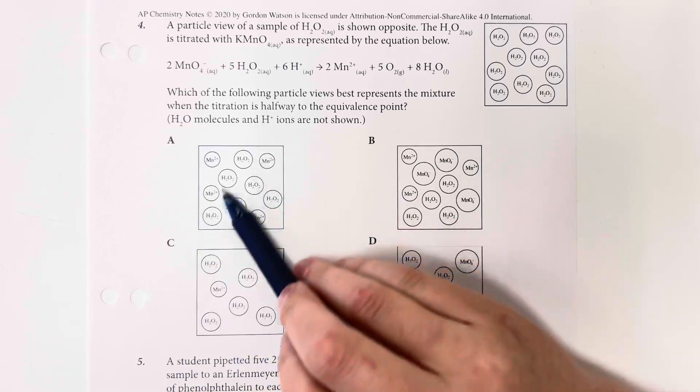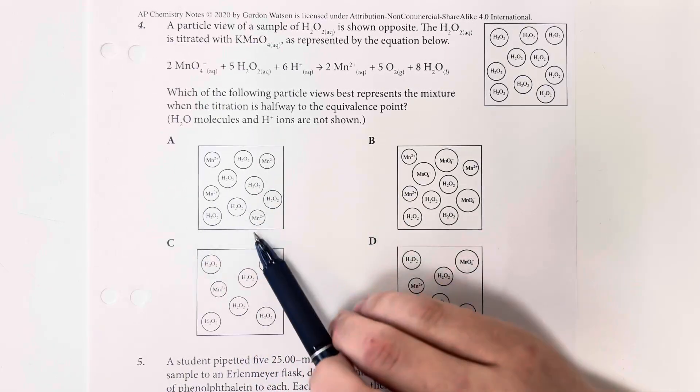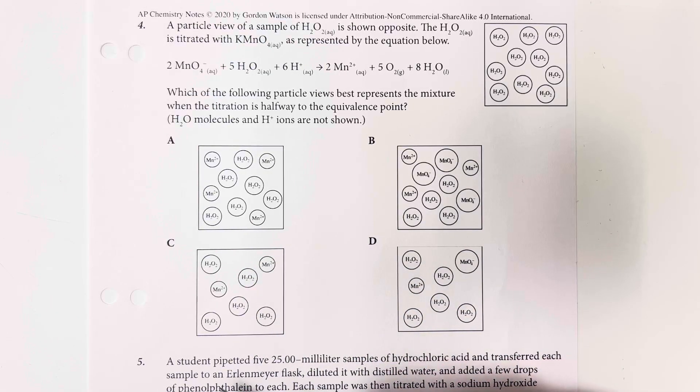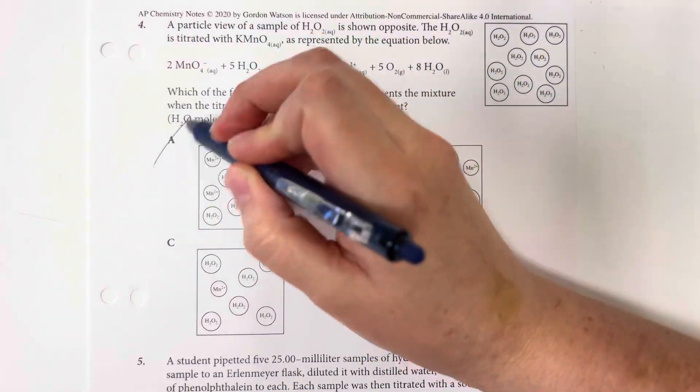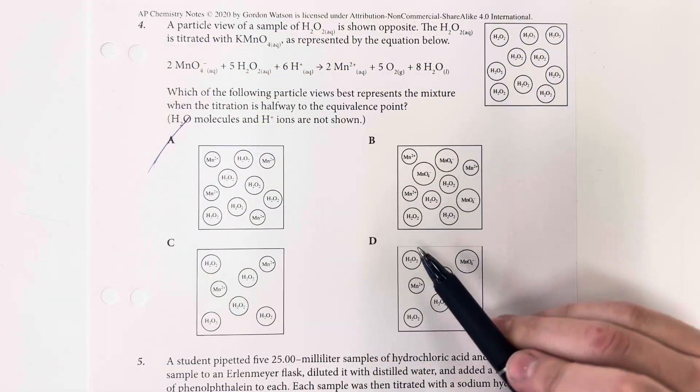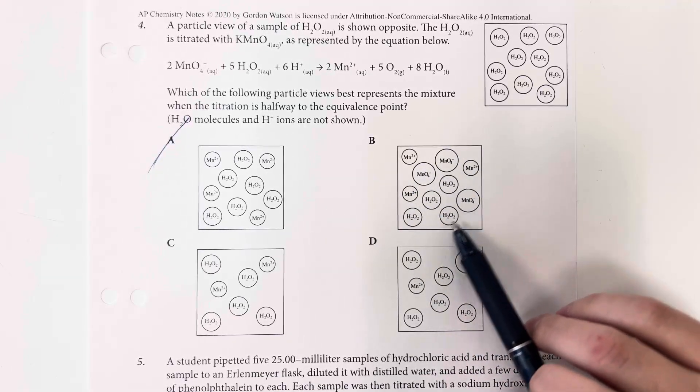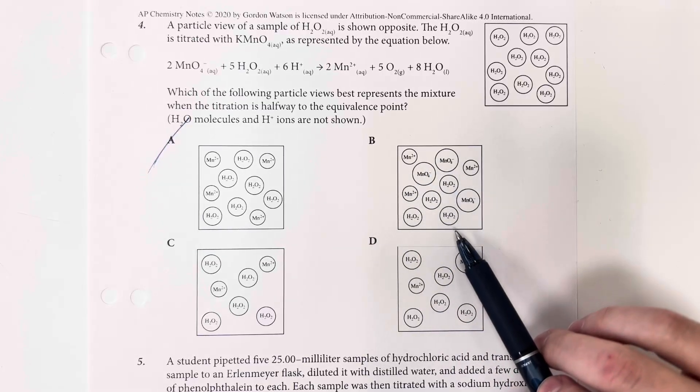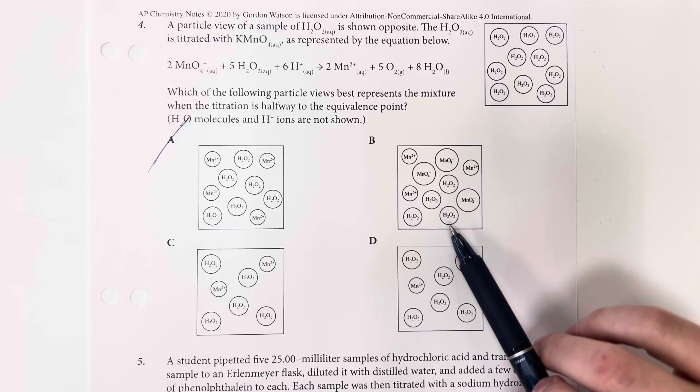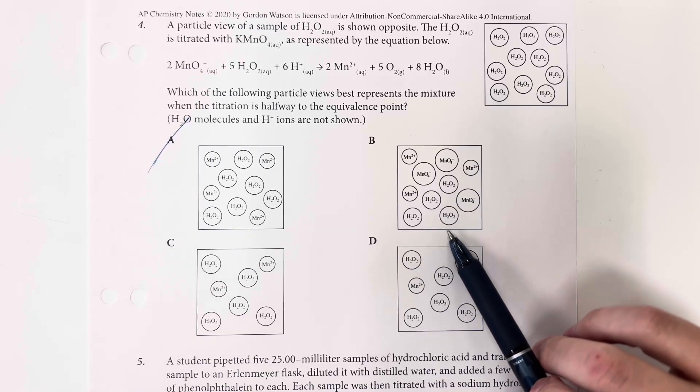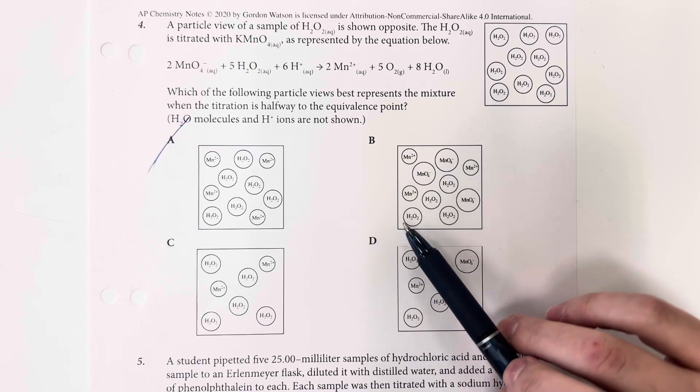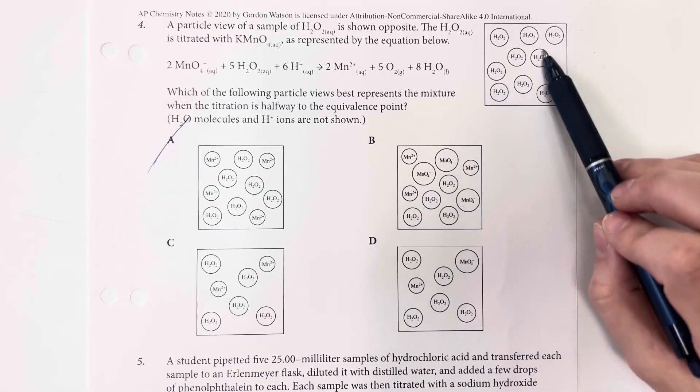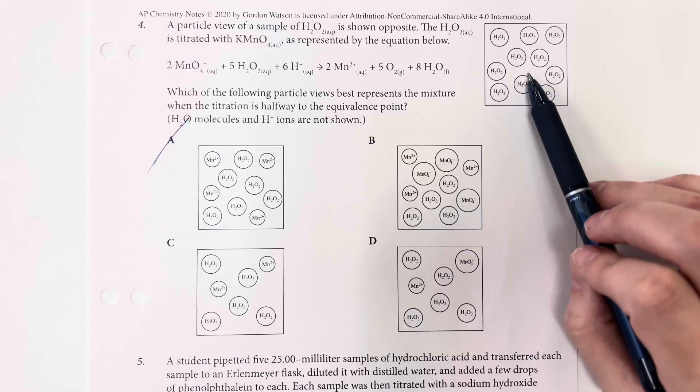So here I see manganese and hydrogen peroxide. I don't see oxygen at all or any of my other reactants. So that doesn't quite make sense. Here I have a lot of permanganate and some manganeses here. No oxygens, no acid, no nothing. I have a lot of permanganate and let's see, counting here. So I should have,